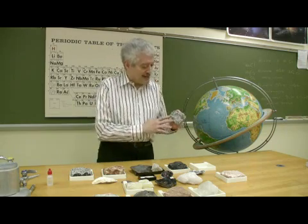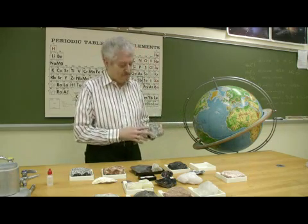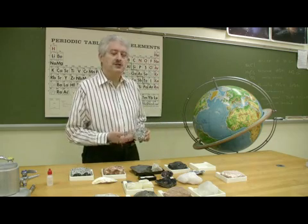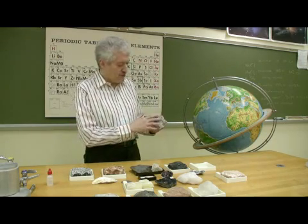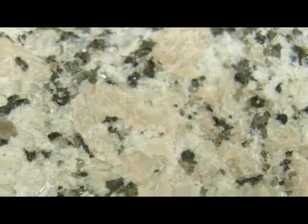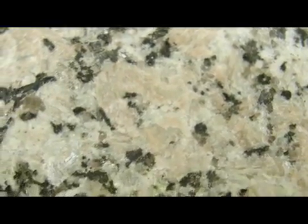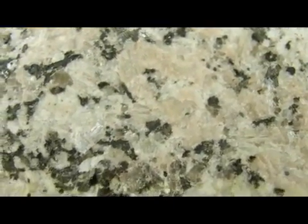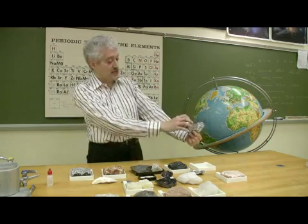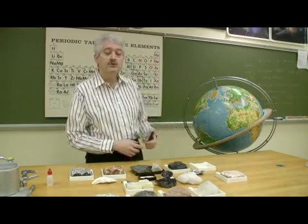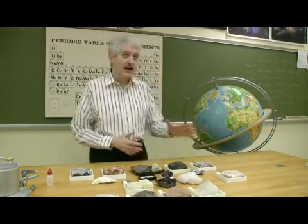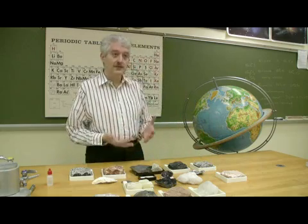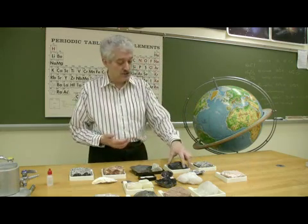This is an igneous rock called granite. Igneous rocks basically have one of two textures, the most common. This is called a phaneritic texture, which means it has crystals big enough to be seen. The normal guideline is you hold it out at arm's length — if you can see individual different minerals, you call that a phaneritic texture. Granite forms by slow cooling underground and develops large crystals.